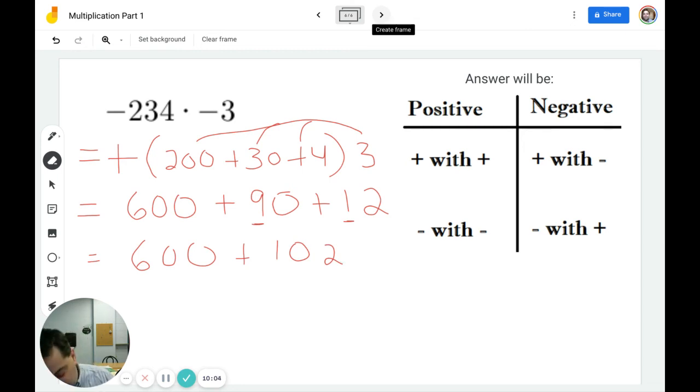And now I'm looking here and I have 60 plus 10. 60 plus 10 is 70. And I can see I have 2 plus 0. So it becomes 702.